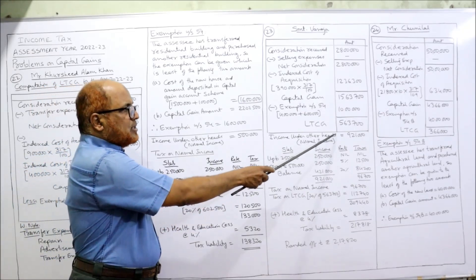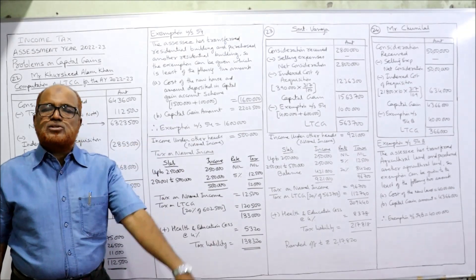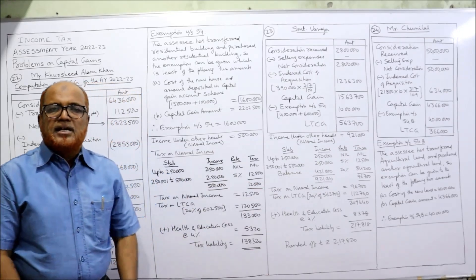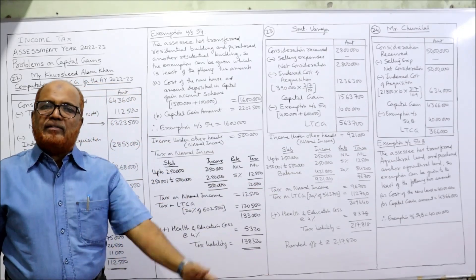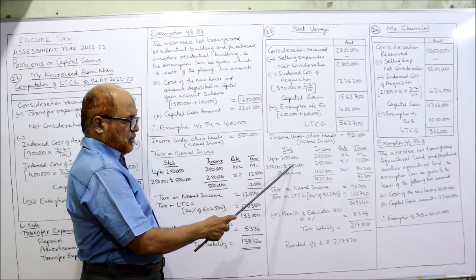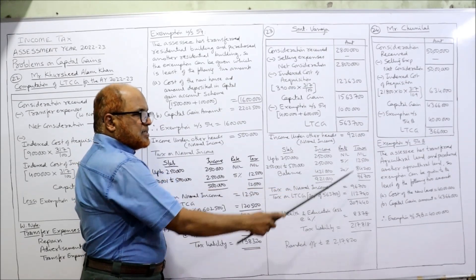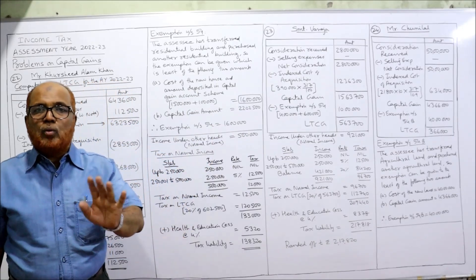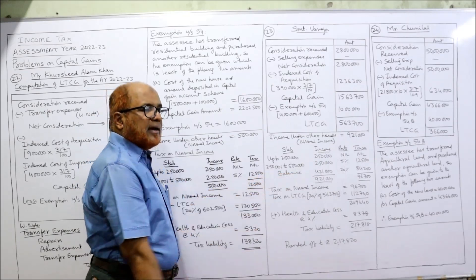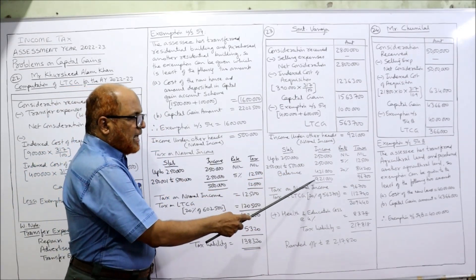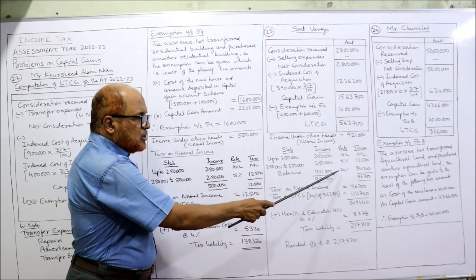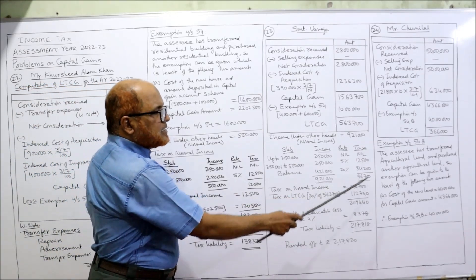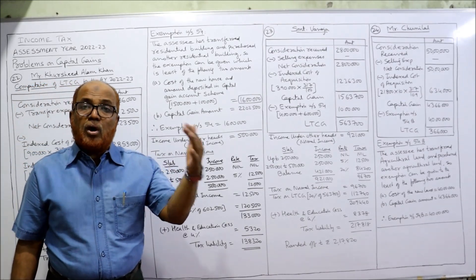Now calculate tax liability. Income under other heads is Rs. 9,21,000 (normal income). Tax on normal income: up to Rs. 2,50,000 — nil; Rs. 2,50,001 to Rs. 5 lakh — Rs. 2,50,000 × 5% = Rs. 12,500; Rs. 5,00,001 to Rs. 9,21,000 — Rs. 4,21,000 × 20% = Rs. 84,200. Total tax on normal income: Rs. 96,700.